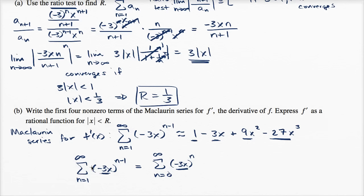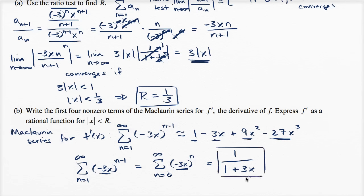So what's the sum of a geometric series with a certain common ratio? It's going to be equal to the first term — and regardless of how you view this, the first term is one — divided by one minus the common ratio. Our common ratio is negative three x, so one minus negative three x is just one plus three x. If this looks unfamiliar, I encourage you to watch the sum of infinite geometric series. But anyway, assuming x is within our radius of convergence, f prime of x equals one divided by one plus three x.